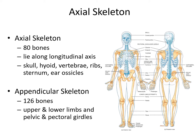The axial skeleton, shown in blue in this diagram, includes the bones of the skull, the hyoid — a bone found in the throat that provides attachment for the larynx — the vertebrae comprising the spine, the ribs attached to the thoracic vertebrae, the sternum or breastbone, and the ear ossicles, the tiny bones found within the middle ear. The appendicular skeleton consists of the pectoral girdle (scapula and clavicles), the arms, the pelvic girdle (with the exception of the sacrum, which is part of the axial skeleton), and the legs.